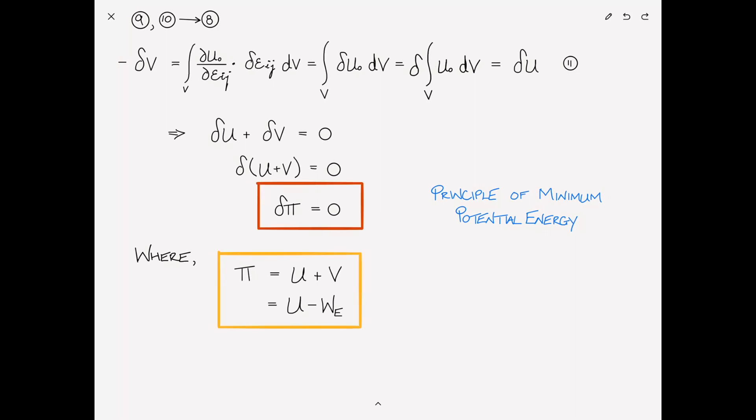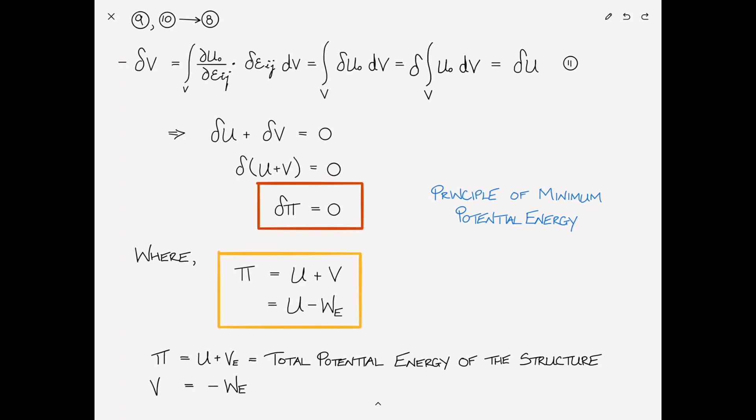The total potential energy π = U + V has two components: V, the potential due to the external work (the negative of the external work), and U, the strain energy due to stored stresses and strains within the material. The principle of minimum potential energy tells us that a structure in equilibrium will assume a displacement field that minimizes its total potential energy. Note that π = U + V, sometimes written U + Vₑ, is the total potential energy of the structure, where V equals the negative of the external work — the potential of the external loads.